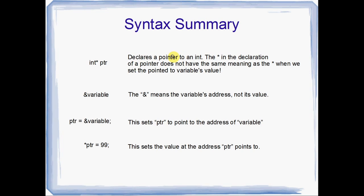A quick syntax summary: 'data type star pointer name' declares a new pointer. It's important not to confuse this declaration star with the star used when setting the value of the box a pointer is pointing to — in a declaration it just indicates you're declaring a pointer, whereas the other star means 'set the value that this pointer is pointing to'. Ampersand before a variable name means the variable's address, its box number in RAM. To set a pointer to the address of a variable, use ptr equals ampersand variable name. And once the pointer is set, you can change the pointed-to variable's value using star pointer name equals whatever value you want.